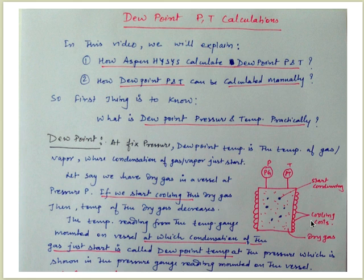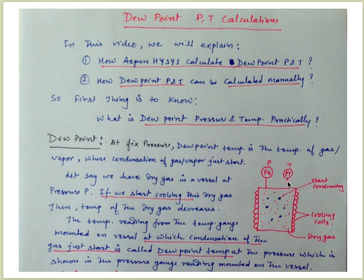Let's say we have a dry gas in this vessel and we start cooling this gas. Due to the cooling, the temperature of the gas starts reducing, and at a certain point when we keep on cooling, the gas will start condensing. The temperature reading at that point gives you the dew point temperature at the pressure shown on the pressure gauge at that time.